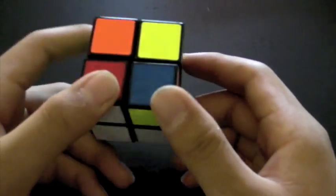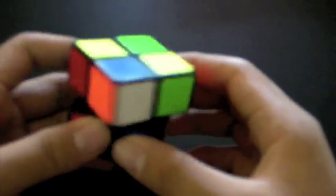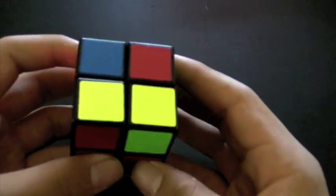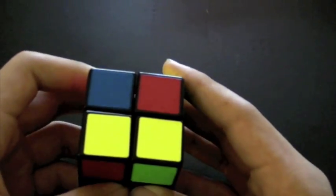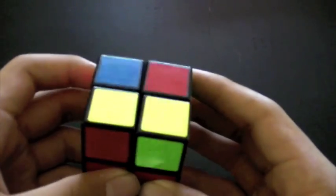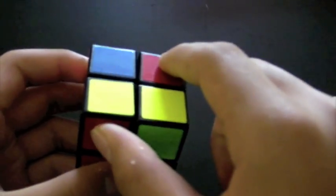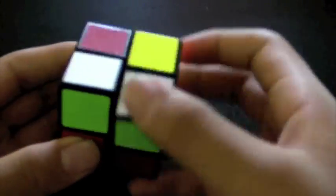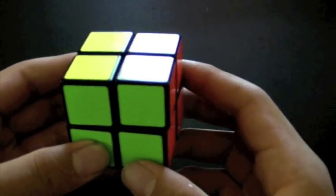And then we have the method that I use mainly. It's called CLL. Where it starts out like LBL. You just make a first face using intuition. And then you go and solve permutation and orientation at the same time, using one of 42 algorithms. Recognition is through something called color recognition, where in this case I would see that these two are the same color, and these two are opposite colors. So I know to do this algorithm to solve everything at once.